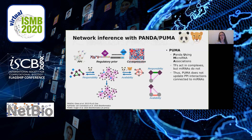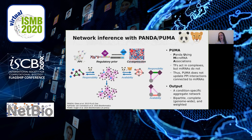PUMA stands for PANDA Using MicroRNA Associations. With PUMA, we made critical adjustments to the cooperativity networks — the PPI in PANDA — as well as to the update function, to account for different mechanisms of microRNA regulation. Transcription factors act in complexes, but microRNAs do not. Therefore, PUMA does not update any PPI interactions except for self-interactions connected to microRNAs. The output of both PUMA and PANDA is a condition-specific network that is bipartite (regulators and targets), complete (genome-wide), and weighted, providing the likelihood of regulation between the microRNA and its target gene.